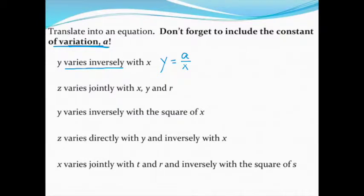Next up, we see that Z varies jointly with X, R, and Y. All varies jointly means is that everything varies directly. So rather than just do a single variable times our constant of variation, we have multiple variables. Let's go in the order that the letters are presented. So Z will come first. So I'll say Z equals A.